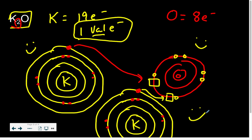Summary: ionic bonds form between a non-metal and a metal. Covalent bonds form between two non-metals. Those are your two different types. Thanks for listening.